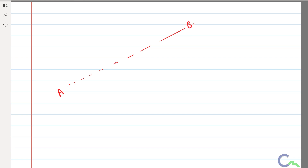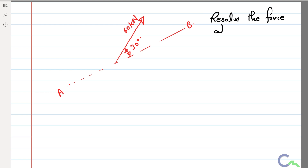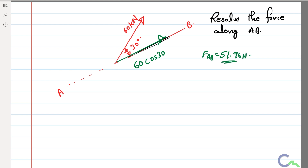Now for the inclined plane problem. An inclined plane AB is given with a force of 60 kilo Newton acting on it at an angle of 30 degrees. If they ask to resolve the given force along AB, along the direction where the angle is given, I know that is the cos component: 60 cos 30. Calculating, F along AB = 60 cos 30 = 51.96 Newton.